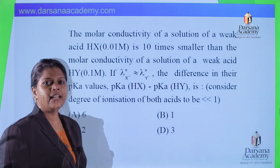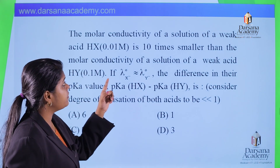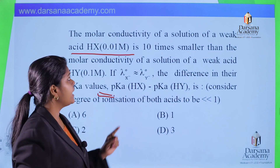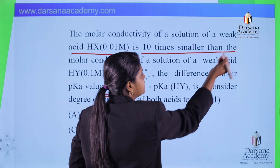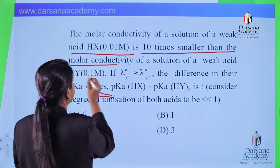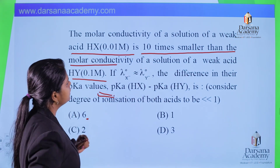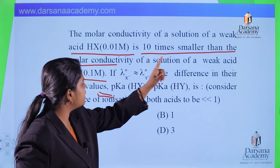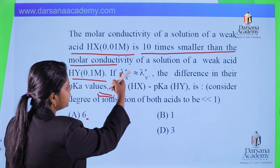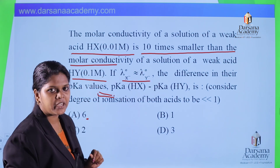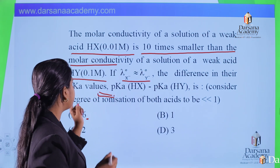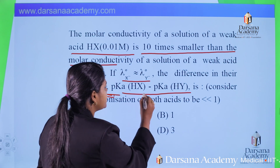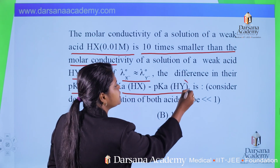Let me read this question. The molar conductivity of a solution of a weak acid HX at a given concentration is 10 times smaller than the molar conductance of a solution of weak acid HY. We have to calculate the difference in their pKa values.